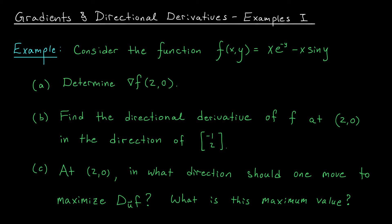In part b, we're looking for the directional derivative of f at (2, 0) moving in the direction of (-1, 2). Finally, in part c, we're looking for the direction in which we should move from the point (2, 0) to maximize our directional derivative. We'd also like to know the maximum value of the directional derivative.